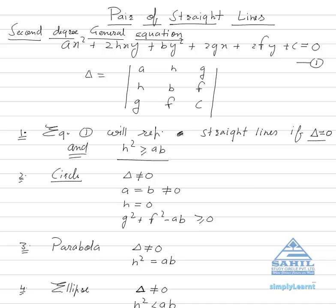Our topic is pair of straight lines, but before going to pair of straight lines, we have to analyze the general second degree equation. The equation ax² + 2hxy + by² + 2gx + 2fy + c = 0 is called the second degree general equation. It can represent a pair of straight lines, a circle, a parabola, an ellipse, or a hyperbola. We have to identify under which condition it represents which curve.